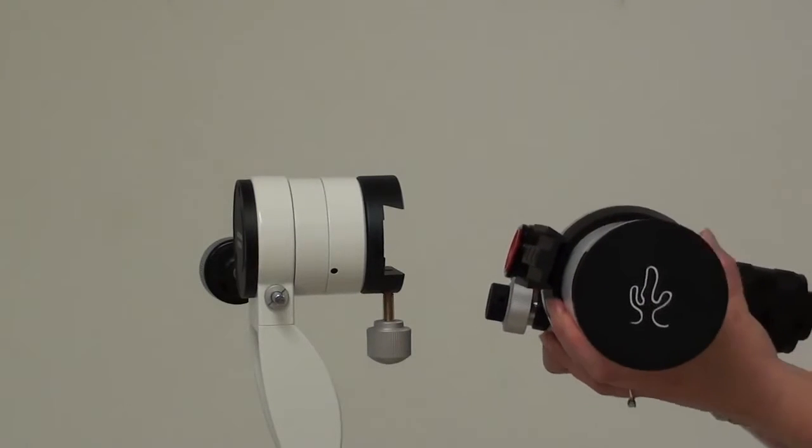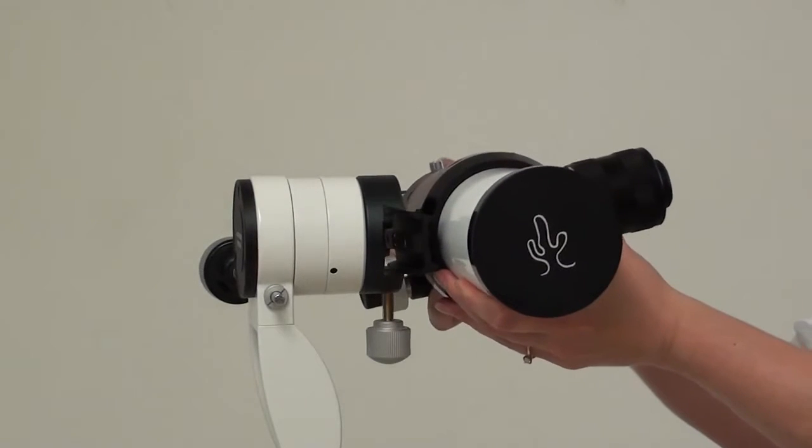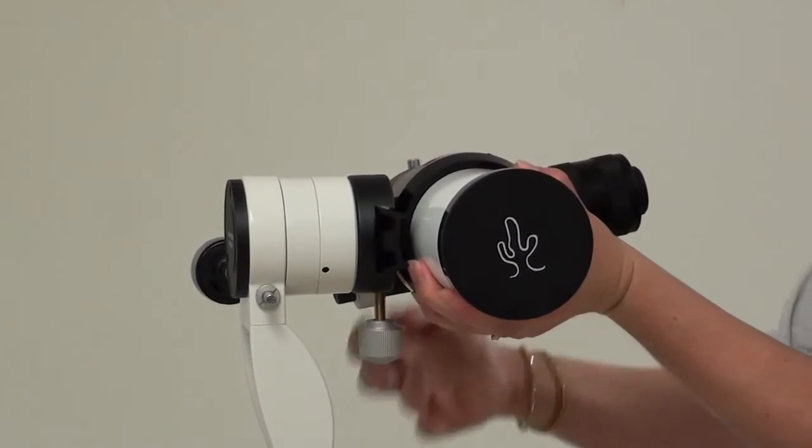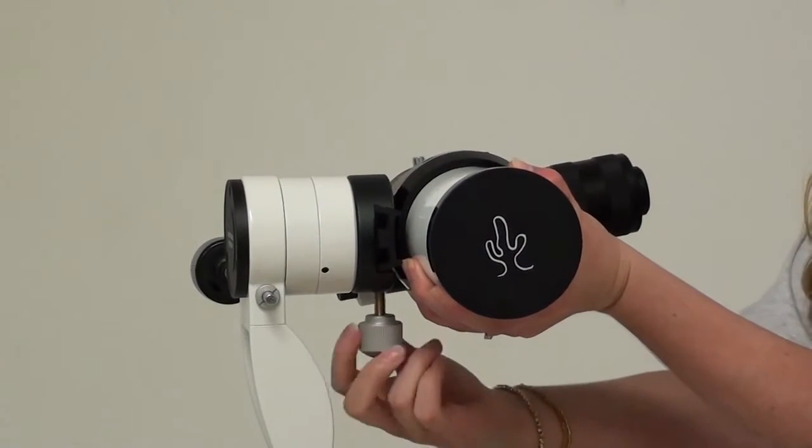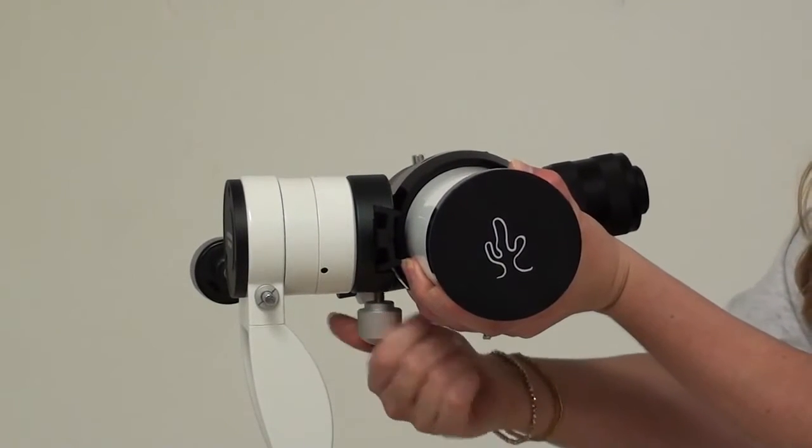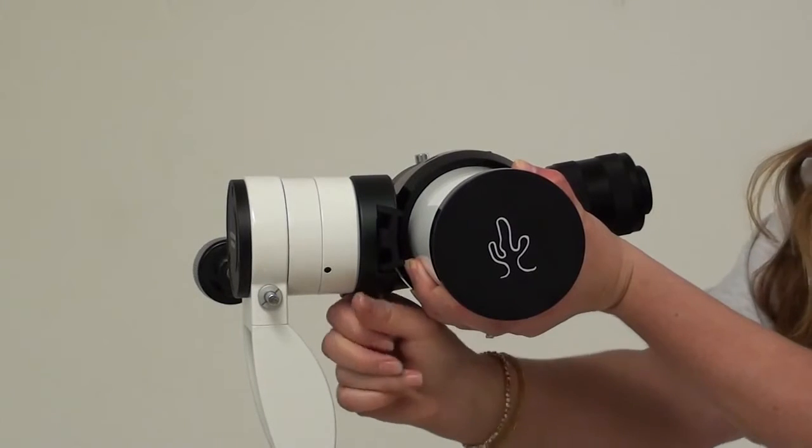Now let's put the LS60 on the mount. Make sure it's nice and secure to avoid any damage.